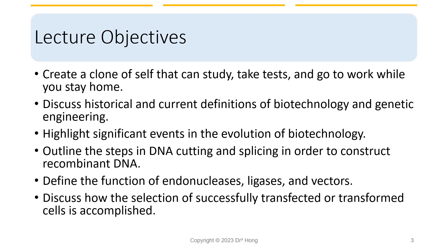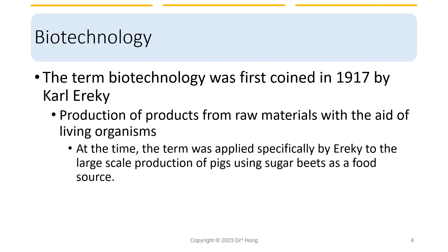We will also discuss how the selection of successfully transfected or transformed cells is accomplished. So when did the term biotechnology come about? The term biotechnology was coined in 1917 by a Hungarian engineer called Erky. At that time, the term meant all the lines of work by which products are produced from raw materials with the aid of living organisms. It was used to describe large-scale production of pigs using sugar beets as food. The scientists envisioned a biochemical age similar to the Stone Age and Iron Age. Biotechnology is not new — man has been manipulating living organisms to solve problems and impact the way of life for millennia.